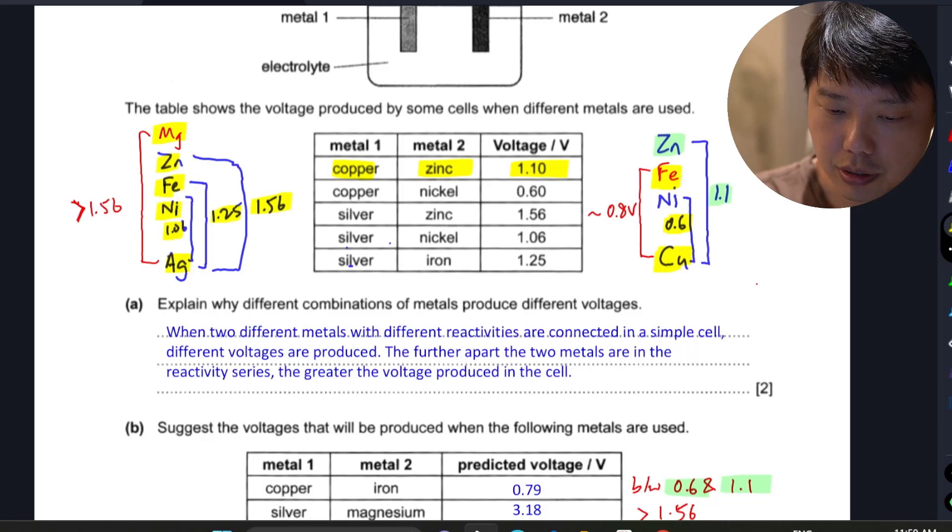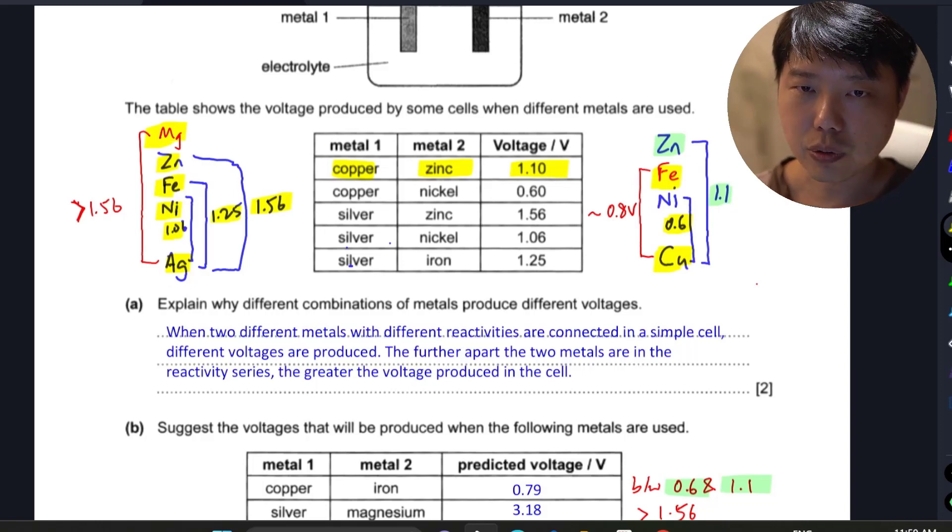Magnesium is the most reactive metal, so the value you propose must be above 1.56 volts because the difference in reactivity is even greater than the other three metals.